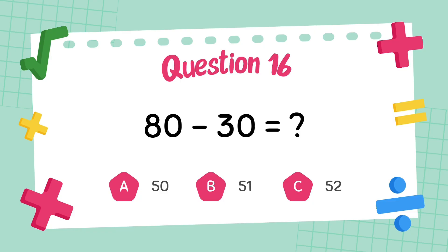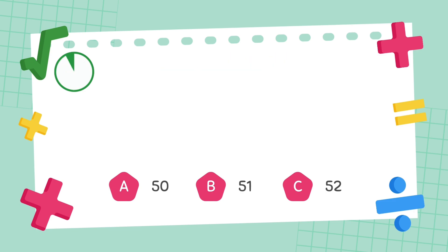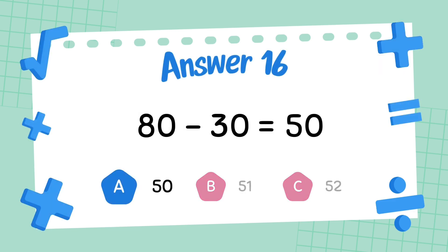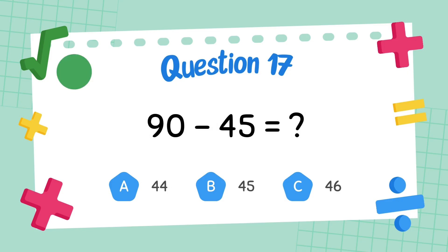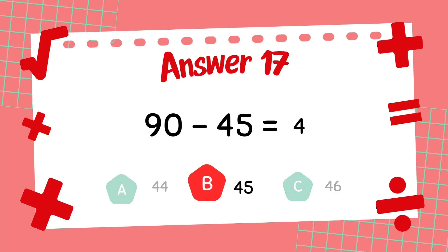What is 80 minus 30? The answer is 50. What is 90 minus 45? The answer is 45.